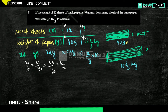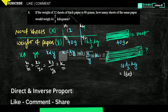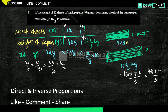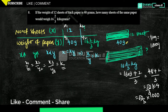Convert 16 and 2/3 kilograms: that is (16 times 3 plus 2) by 3 equals 50 by 3 kilograms. Since 1 kilogram equals 1000 grams, y2 equals 50 by 3 into 1000 grams.